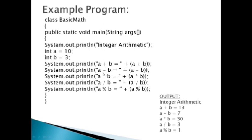For subtraction, using the same data: 10 minus 3 produces output 7. For multiplication, 10 multiplied by 3 gives output 30. For division, 10 divided by 3 keeps the quotient value as 3. For modular division, it performs the same division but prints the remainder value instead. When I divide 10 by 3, the remainder is 1, so the modulo operator gives 1 while the division operator gives quotient 3.